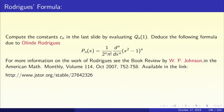So pn(x) equals 1 over (2^n times n factorial) times the nth derivative of (x squared minus 1)^n. This is a formula that goes back to Olinde Rodrigues. There is a very interesting history behind all these things. Rodrigues was a very interesting mathematician — he was also an astronomer. The reference has been shared with you for the life and works of Olinde Rodrigues.